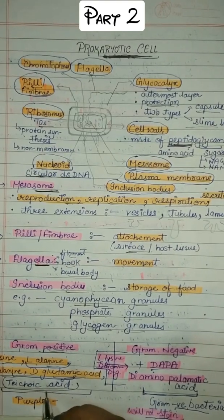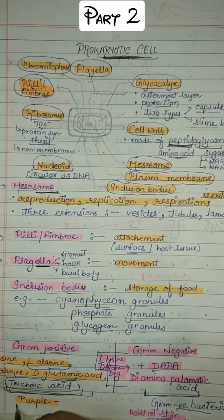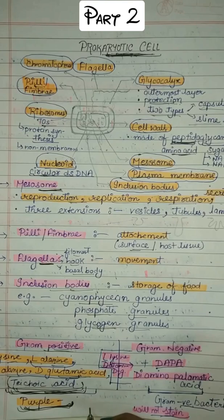So when we do the process of gram staining, the bacteria reacts to these and becomes purple. It means it is showing a positive result to gram staining.